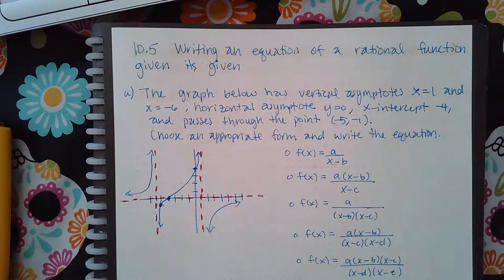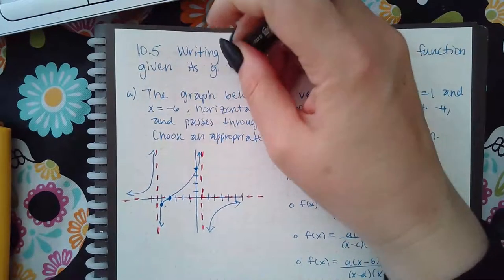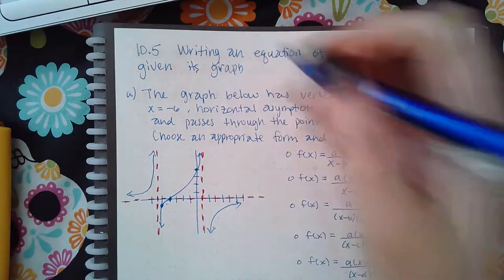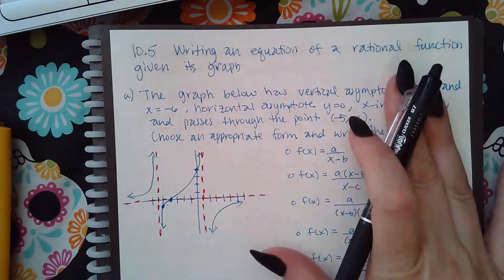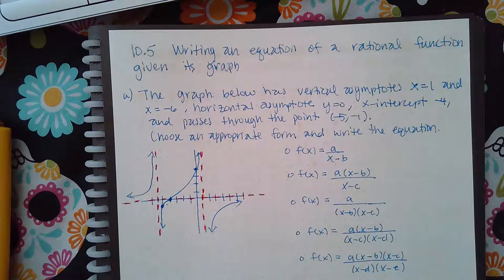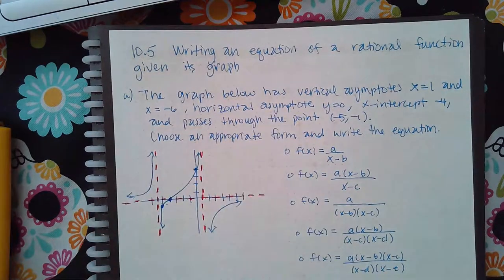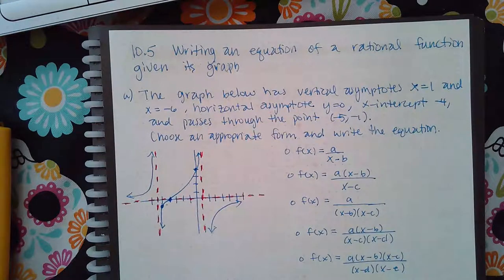This is about writing an equation of a rational function given its graph. Sometimes they give you just the information or they give you an image with the information, so you just have to be careful. You really don't need the graph — you can go based off of the information, but if they give you a graph you can always write down the information.